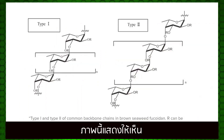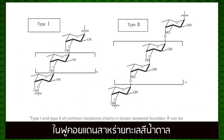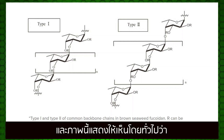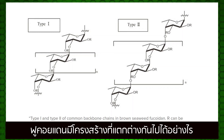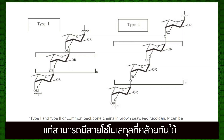This picture shows the type 1 and type 2 common backbone chains in brown seaweed Fucoidan. The side groups can vary depending on the species it comes from, and this image shows how Fucoidan can have a structure that varies greatly and be very complex, but they can have a similar backbone.